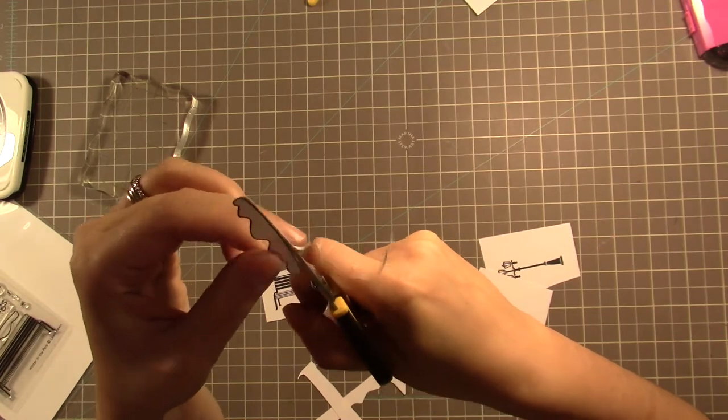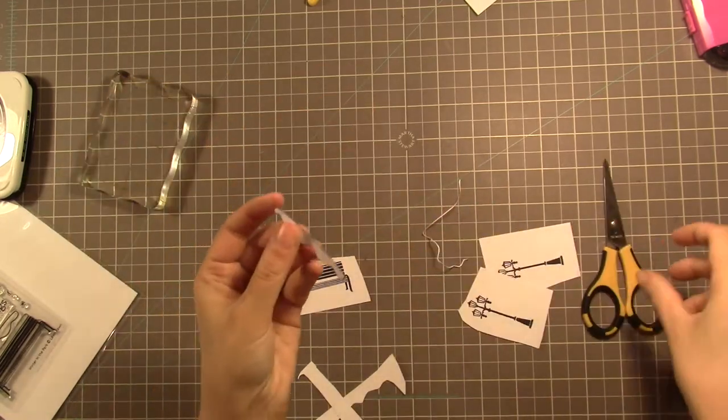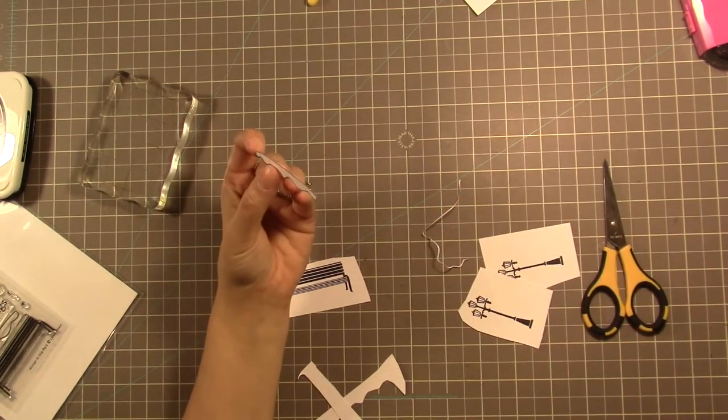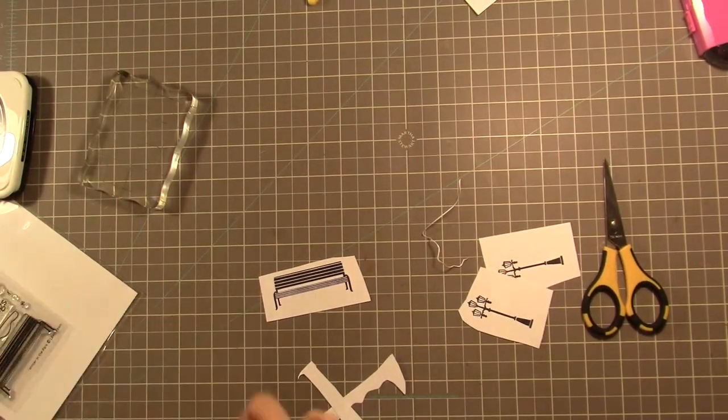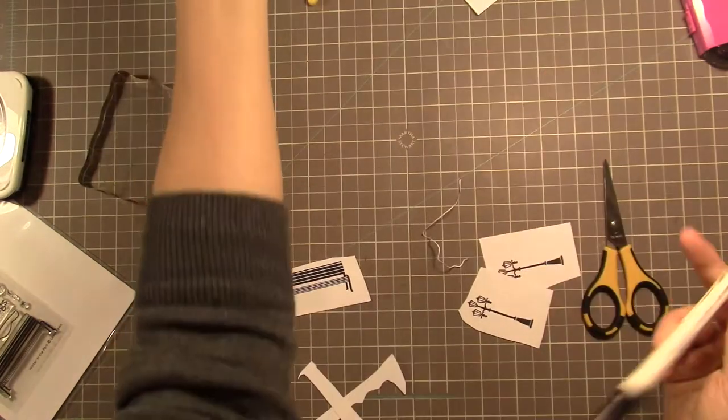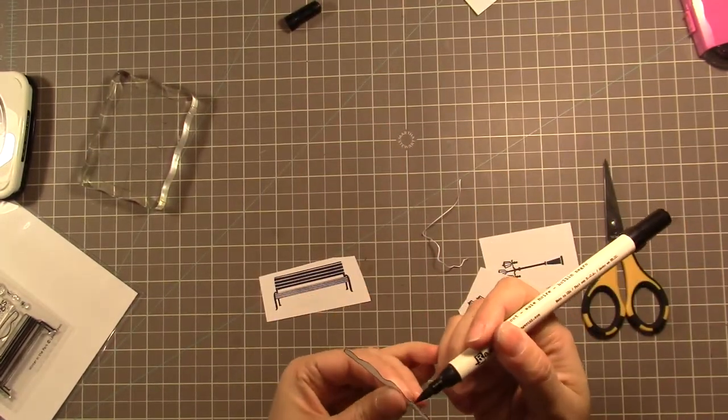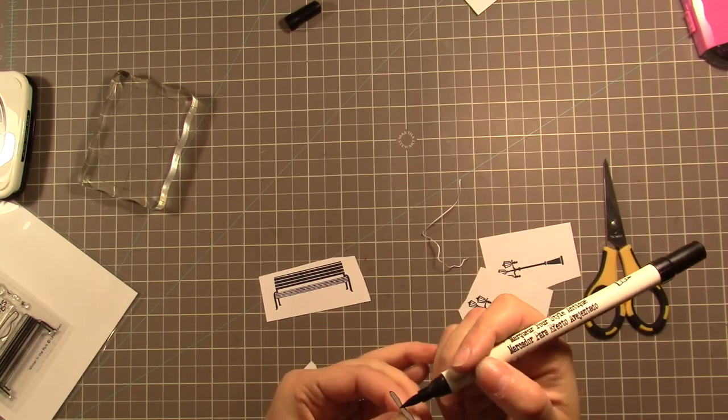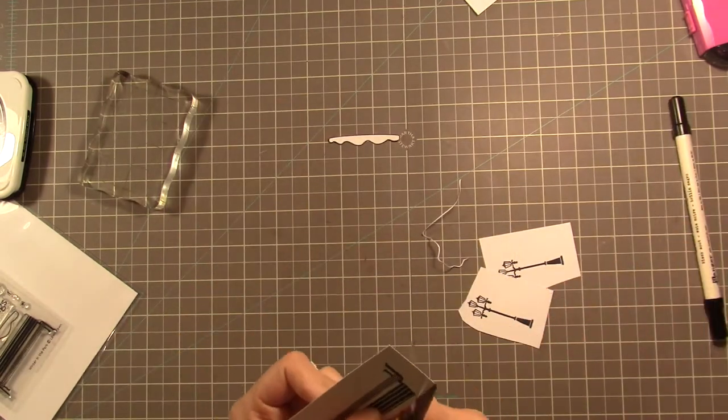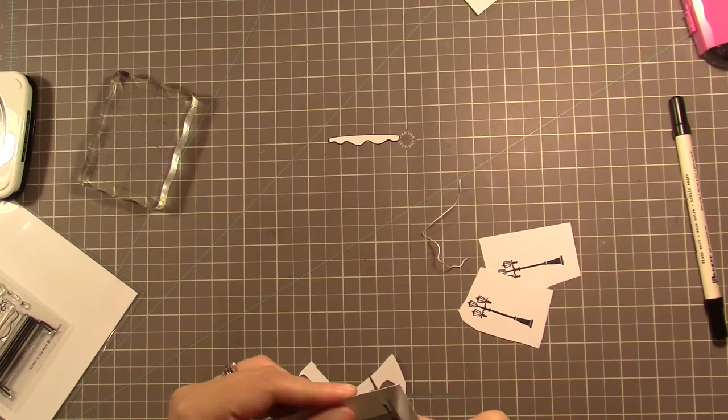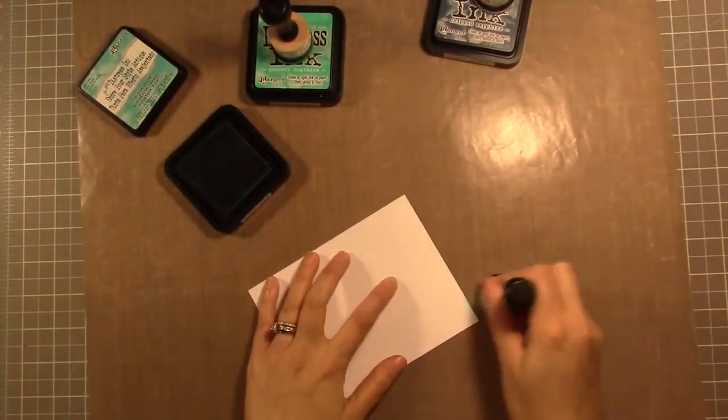No, I will not be boring you with me fussy cutting every piece. I'm using a distress marker on the snow bank because I'm cutting right up against that black line. Everything else I'm leaving a little bit of a white border. I'm going to go on and fussy cut all the other pieces, and it takes me what feels like a hundred years.